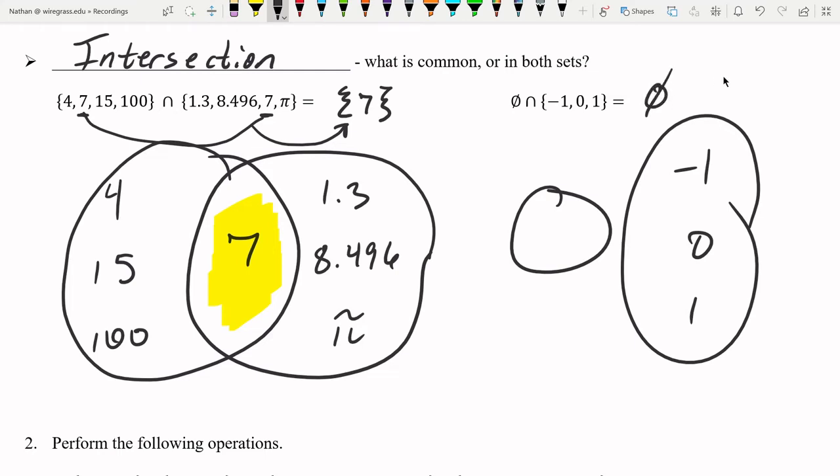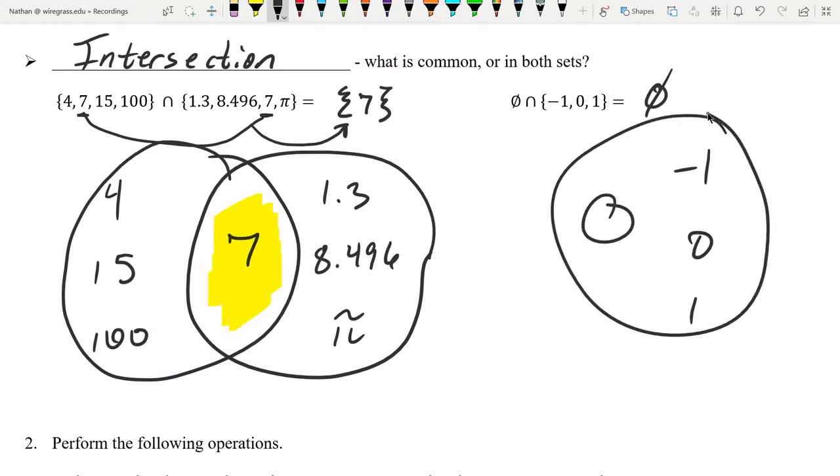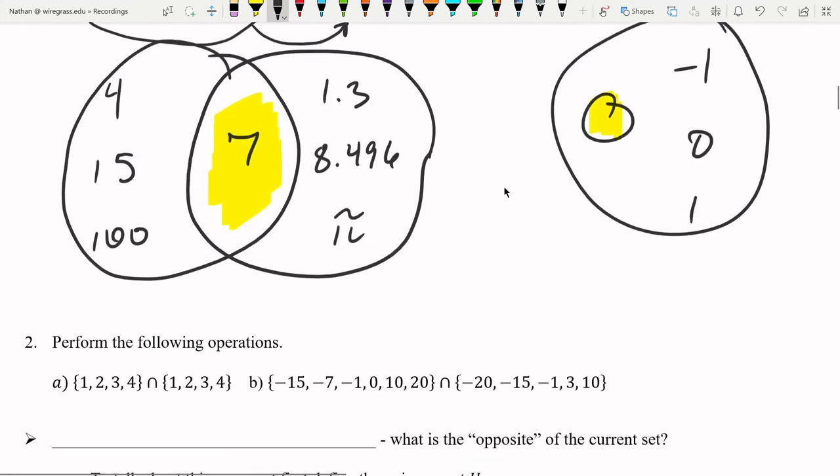It's a set with no elements in it. There's nothing to put in there, so it's just the empty set. You can also think of this as, well, there is an overlap, but the overlap is the nothingness, so to speak, of the empty set. So it's just the empty set again. Either way, it works for your thinking. Give this a try in number 2.